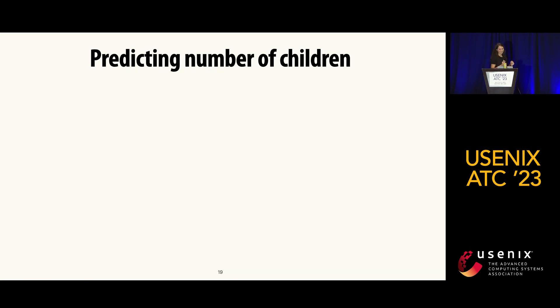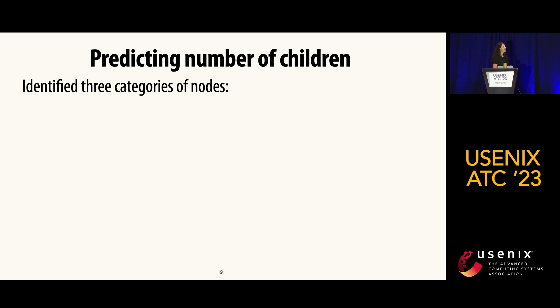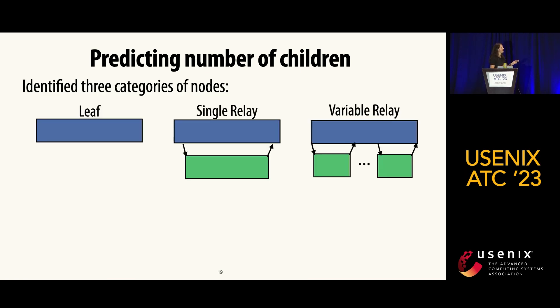The first thing we looked at is predicting the number of children. We identified three categories of nodes: a leaf — a service that makes no outgoing calls ever in our traces — and single relays, which make at most one outgoing call.